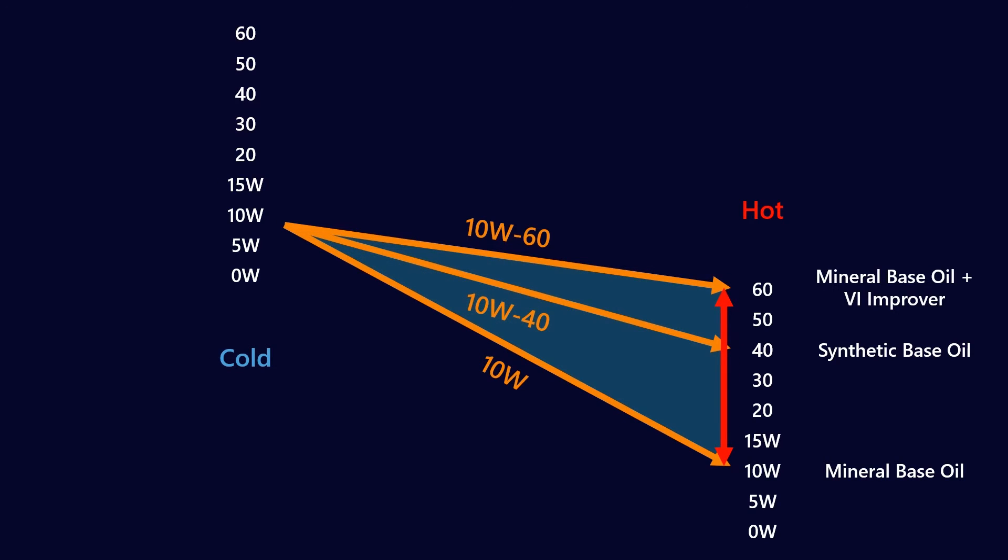We could actually take that mineral base oil and add a lot of VI improvers to get us to a 10W-60. There's all kinds of reasons we don't want to do that. VI improvers over time they shear down, so when they go through high shear areas they break apart and so slowly your 10W-60 will start to look like a 10W. But even more importantly they also contribute to engine deposits and things like that.